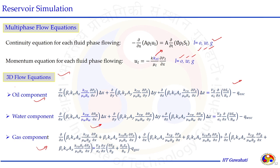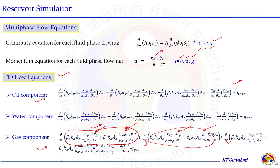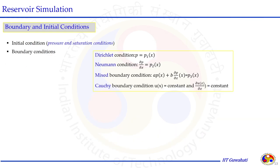Once we set up the conservation equations including constitutive equations, we need to solve them, and for that the boundary and initial conditions need to be specified. The initial condition is the pressure and saturation at time t = 0. The boundary conditions are classified into four types, applicable to any numerical problem.